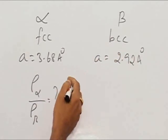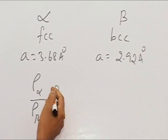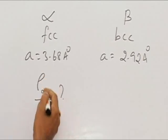So in this problem, what is expected is the ratio of densities of alpha form to beta form.